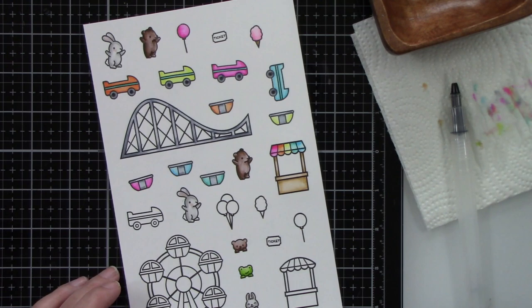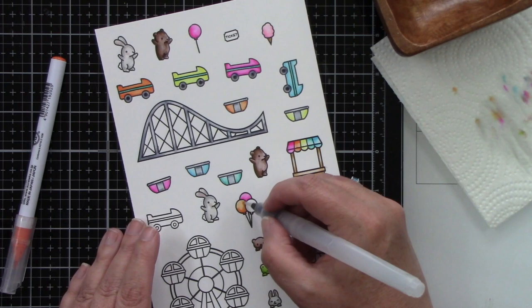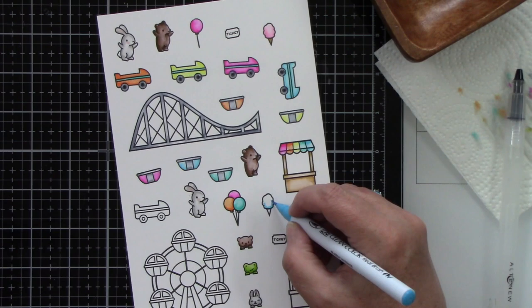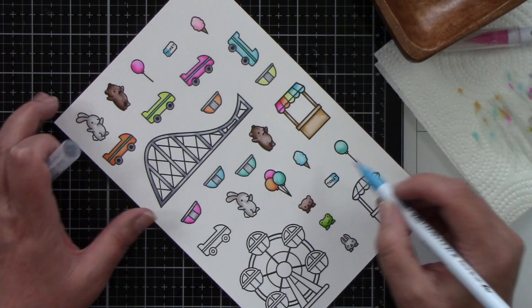Now we've got some balloons. We've got a cluster of balloons, a couple single balloons, and I just think these images are so cute. I love this whole set. I'm using the cobalt blue for another thing of cotton candy, and the tickets are the cobalt blue as well.